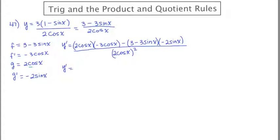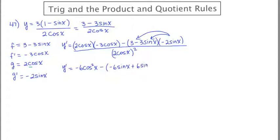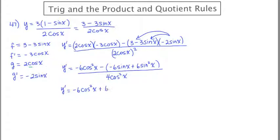On the upper left, that's a pretty easy product: negative 6 cosine squared x. Now the upper right, there's a lot going on. I'm going to distribute this into this and this into this, preceded by a negative. So I'm going to have negative 6 sine x plus 6 sine squared x. All this is going to be over the denominator squared, or 4 cosine squared x. My next move is to distribute the negative through on the top right, giving negative 6 cosine squared x plus 6 sine x minus 6 sine squared x.